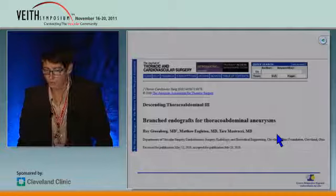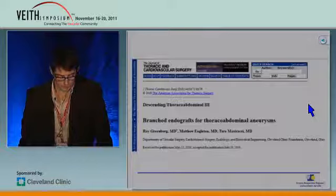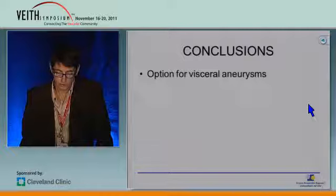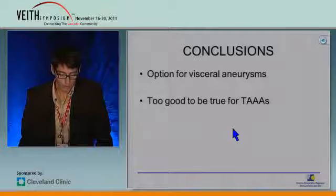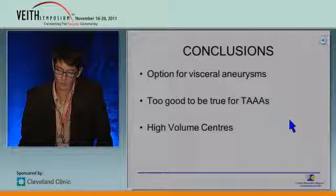What about branched endografts? There's a lot of literature from Tim Schroeder, from Eric Verhoeven, from myself, and this major paper from Roy Greenberg on over 400 patients. I'll present the mid-term and long-term outcomes this afternoon. In conclusion, ladies and gentlemen, the multi-layer stent is probably a good option for visceral aneurysms. There's really no data supporting its use in thoracoabdominal aneurysms — it's probably too good to be true. I really think those large thoracoabdominal aneurysms should be referred to high-volume centers performing both open and endovascular repair. Thank you.